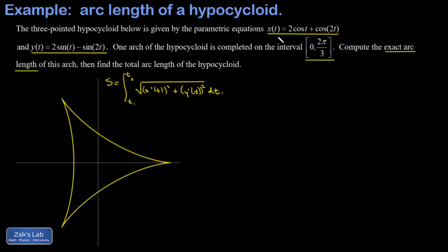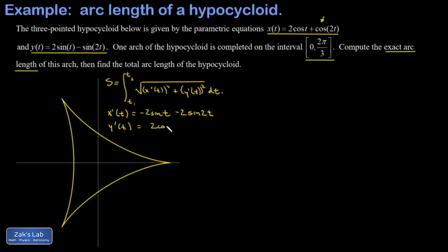We need to differentiate the parametric equations x(t) and y(t), square them, and plug them into the square root. So x′(t) = −2sin(t) − 2sin(2t), where the second term gets a factor of 2 from the chain rule. And y′(t) = 2cos(t) − 2cos(2t), again with the chain rule acting on the second term.